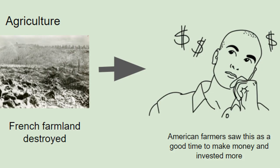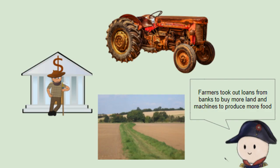During World War One, French farmland was destroyed, meaning that France needed to search for other places to get their food. One of those places was the United States. American farmers saw this as a good time to make money, so they decided to invest more into their farms and equipment.